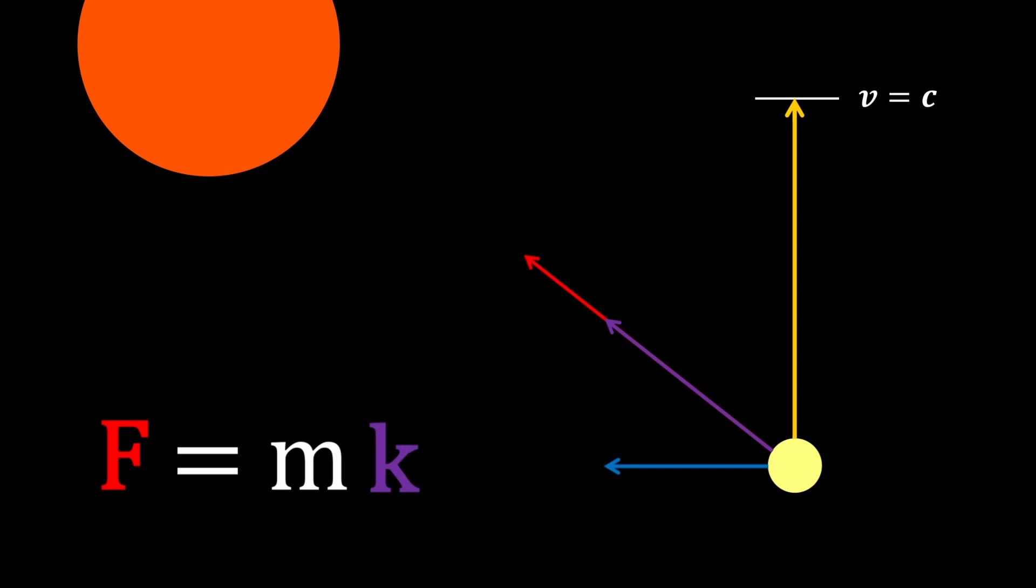As a result, the speed of the object ceases to increase beyond the speed of light, and the perpendicular component of the acceleration that remains bends the light toward the sun. It correctly predicts the bending of light.